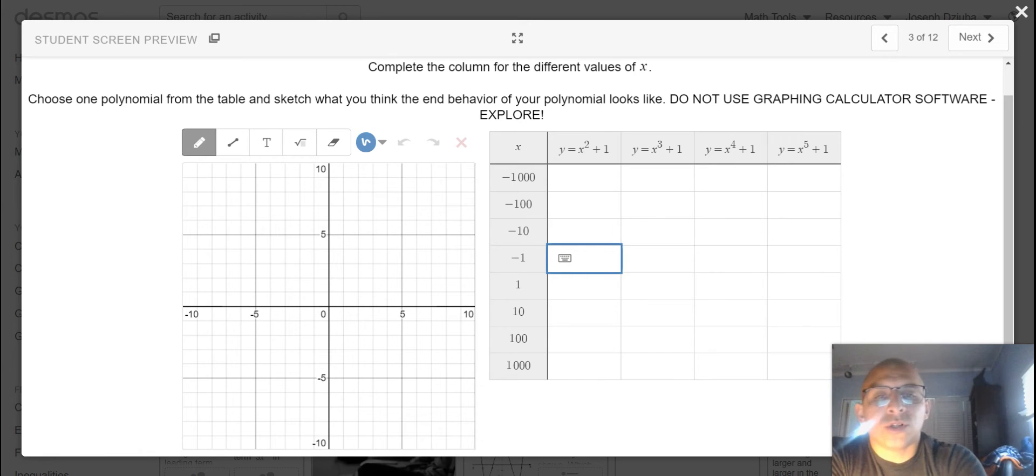I will complete a few rows so you can see that there are different outputs based on the function. So I'll do negative one and one.